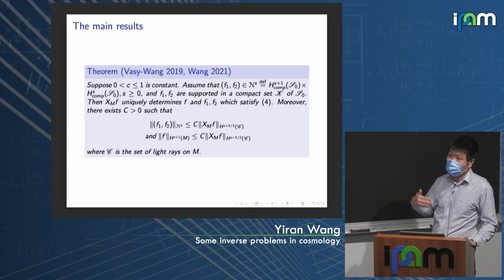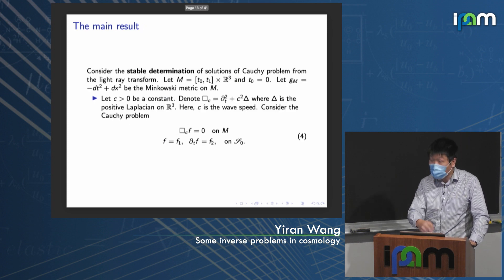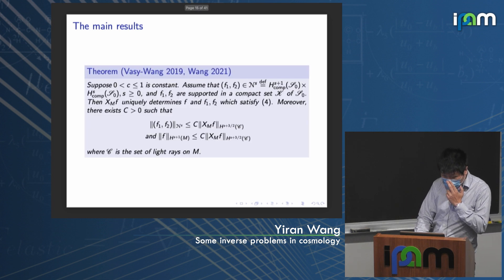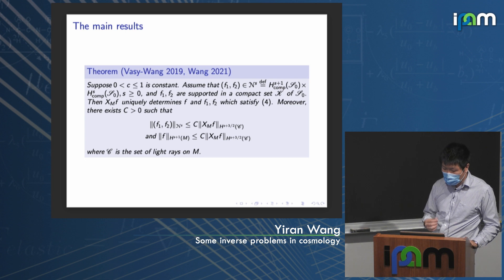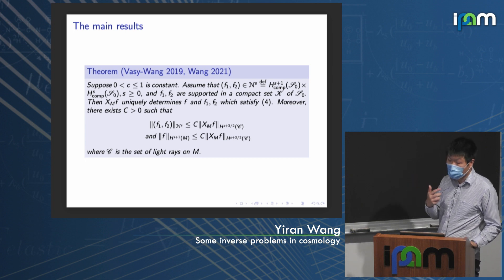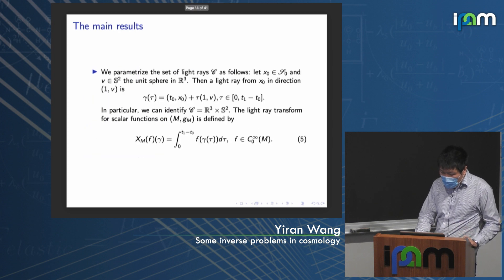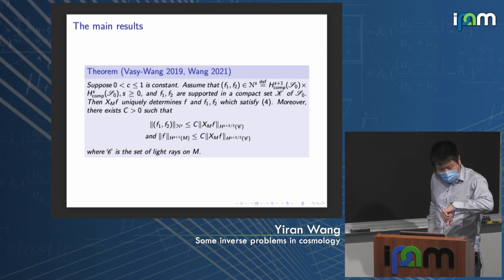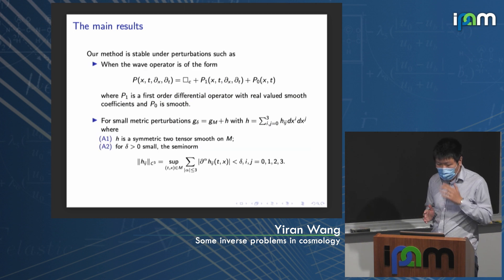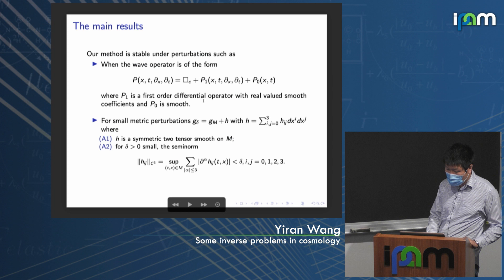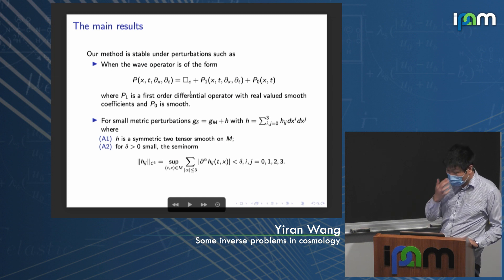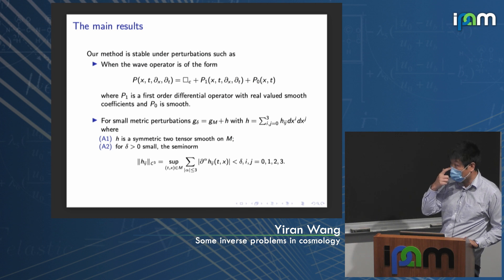Once you determine the initial data, you can determine f through the Cauchy problem. Our method is stable enough to handle lower-order perturbations. If you have first-order or zeroth-order perturbations in the wave operator, we still have the same stable determination result, and this can be applied to the inverse Sachs-Wolfe problem. Also, if you perturb the Minkowski background metric by a small metric perturbation h, we are still able to get the stable determination.